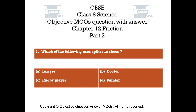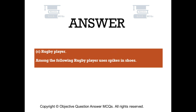The right answer is Option C: Rugby Player. Among the following, a rugby player uses spikes in shoes.